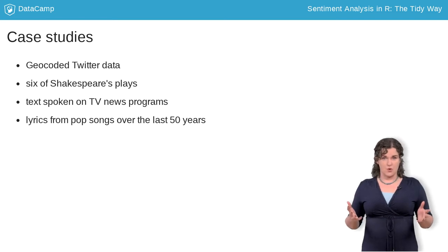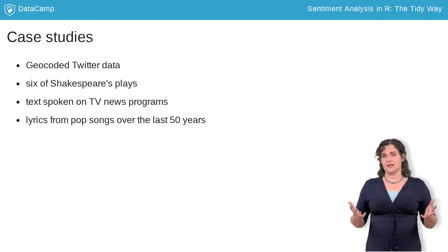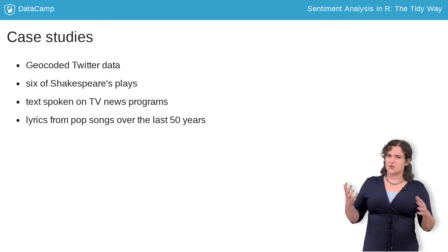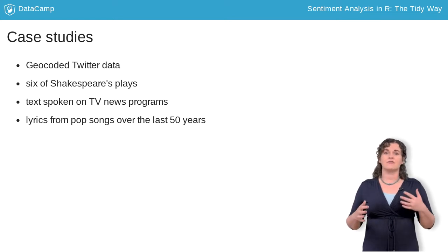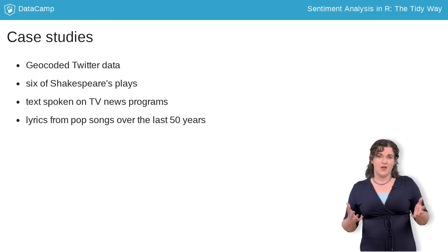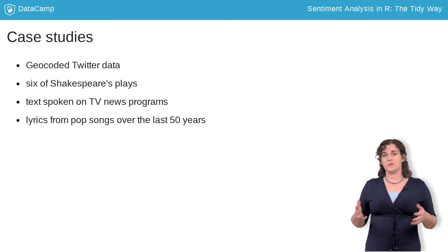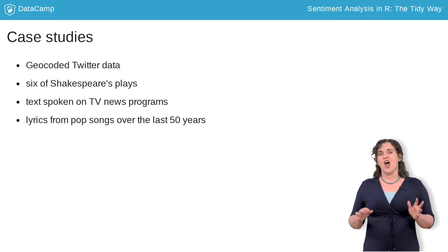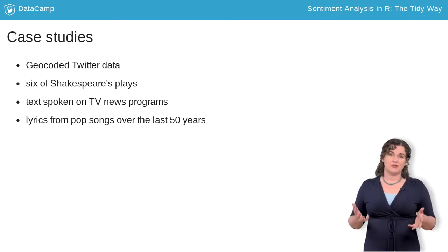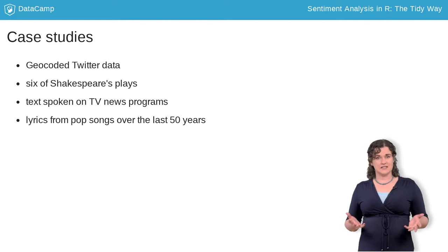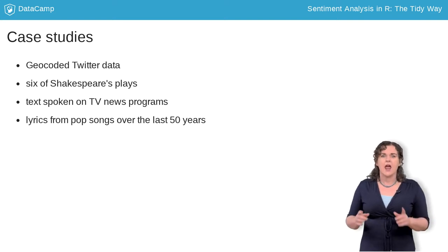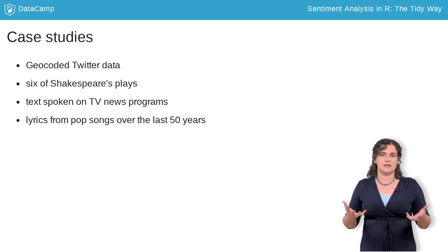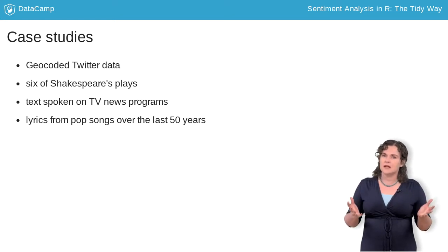Our four chapters in this course will use four datasets. First, a dataset of tweets that have been geocoded so we can see what kinds of words Twitter users in different locations use. Second, a collection of comedies and tragedies by Shakespeare. Third, a dataset of speech from cable TV news shows. And finally, pop lyrics from songs over the last several decades. These case studies demonstrate how you can use these powerful techniques with diverse kinds of text and will allow you to practice your data handling skills and learn about the ways sentiment analysis can be applied.